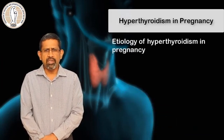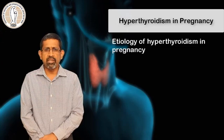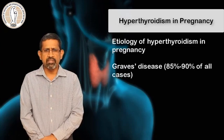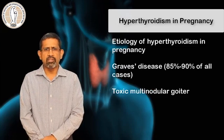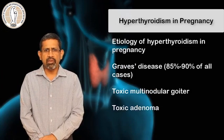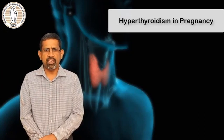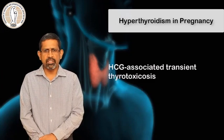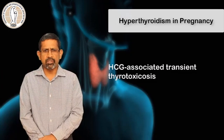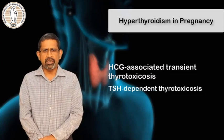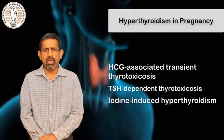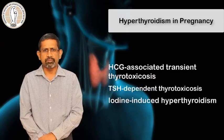The commonest cause for hyperthyroidism in pregnancy remains Graves disease, followed by toxic multinodular goiter, toxic adenoma, and rarely patients can have HCG-associated transient thyrotoxicosis, TSH receptor antibody-dependent thyrotoxicosis, and iodine-induced hyperthyroidism.